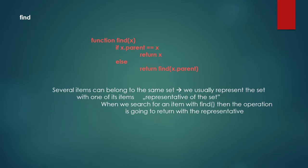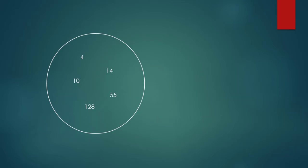We usually implement this data structure as a tree-like structure. It has a root node, and the root node is the representative. So no matter what item we would like to find, it's going to return the value of the root node. This is how disjoint sets work.